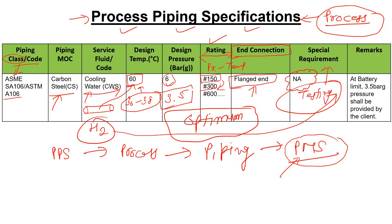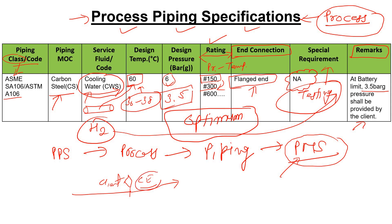Finally, you can provide remarks in the last column. For example, in this cooling water supply line, assume the cooling water is coming from the client side. So in the remarks I have written: 'At battery limit, 3.5 bar g pressure shall be provided by the client.' Now, the question is: how will you ensure that at the battery limit the pressure is 3.5 bar g? Please share your thoughts in the comments box.